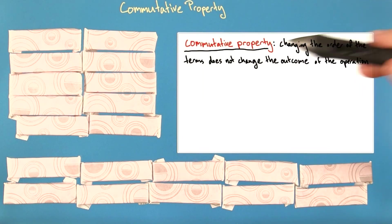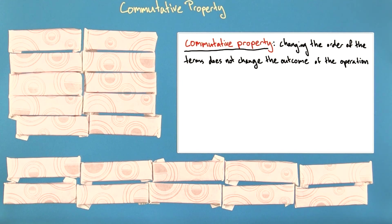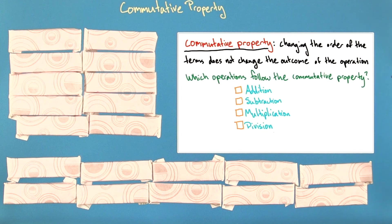The commutative property states that changing the order of the terms does not change the outcome of the operation. So which operations follow the commutative property?